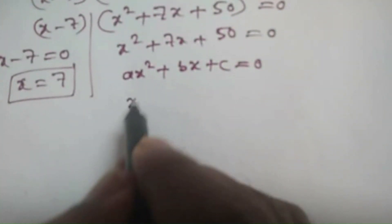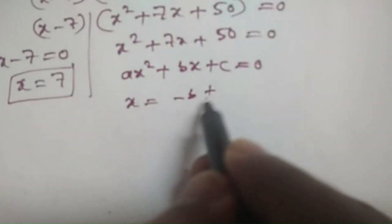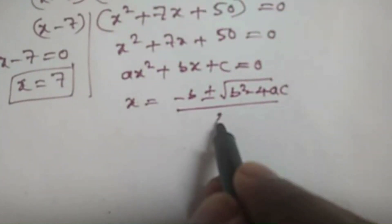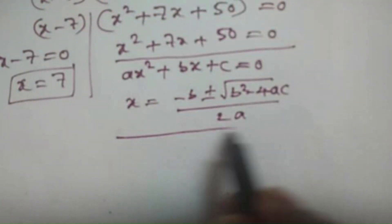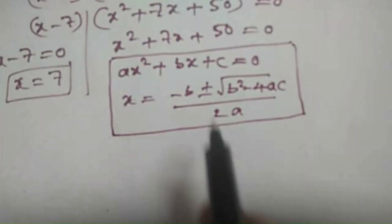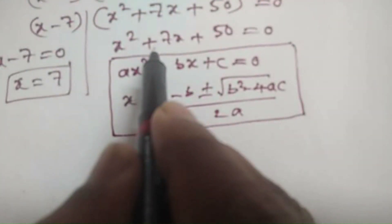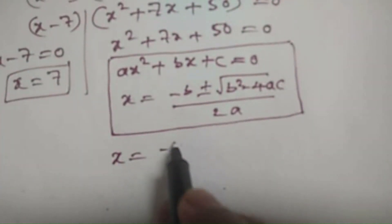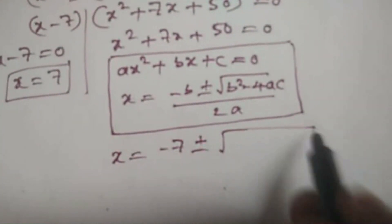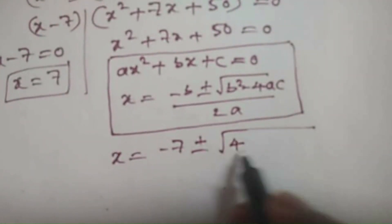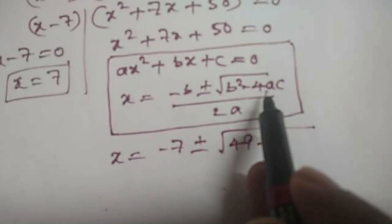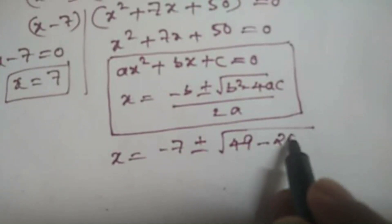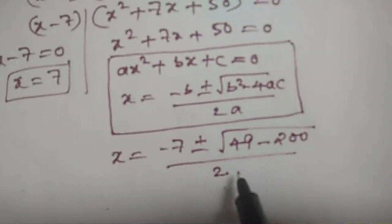The roots are given by x equals minus b plus or minus square root of b squared minus 4ac, all divided by 2a. Applying this formula to x squared plus 7x plus 50 equals 0, the value of x equals minus 7 plus or minus square root of 7 squared minus 4 times 1 times 50, divided by 2 times 1. That is minus 7 plus or minus square root of 49 minus 200, divided by 2, which equals minus 7 plus or minus square root of minus 151, divided by 2.